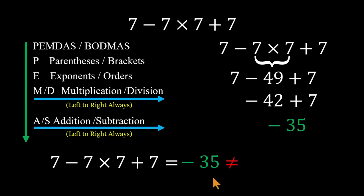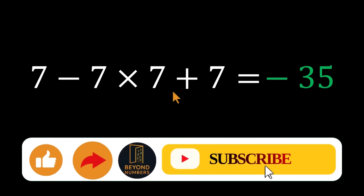So if you got 0, 7, or negative 49 before, you weren't wrong for trying. You just skipped the rule that keeps math fair. Always follow the order of operations and always move left to right when they're equal in rank. What was your first answer before watching? Drop it in the comments, honestly. And hey, if you enjoy solving problems like this, make sure to subscribe for more fun math challenges.